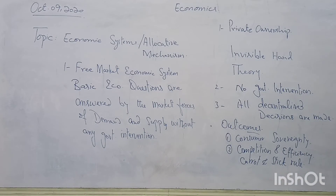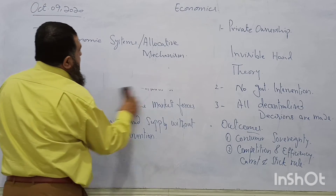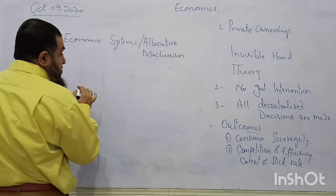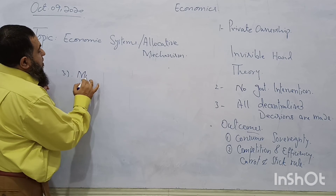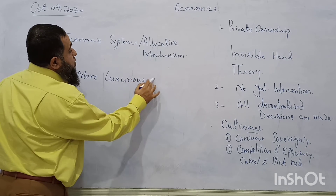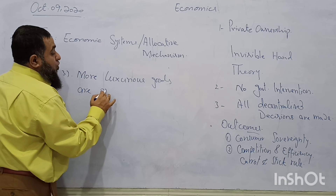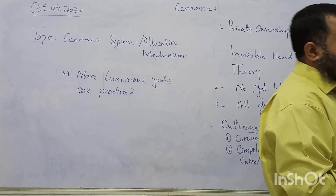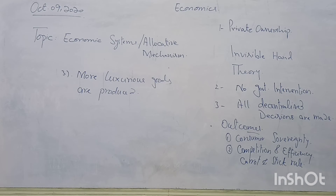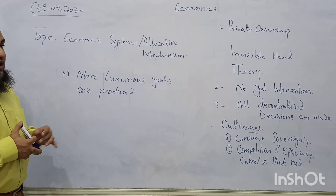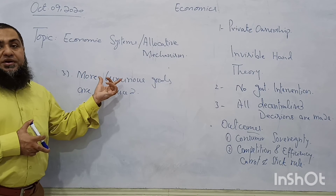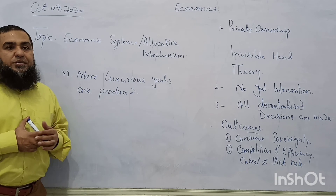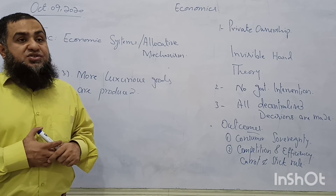More luxury goods are produced — goods that beautify lives and are more qualitative. There is immense competition in markets like mobile phones, with Samsung and iPhones competing to offer better quality and luxury products, improving the quality of life and living standards of people through more variety and qualitative products.